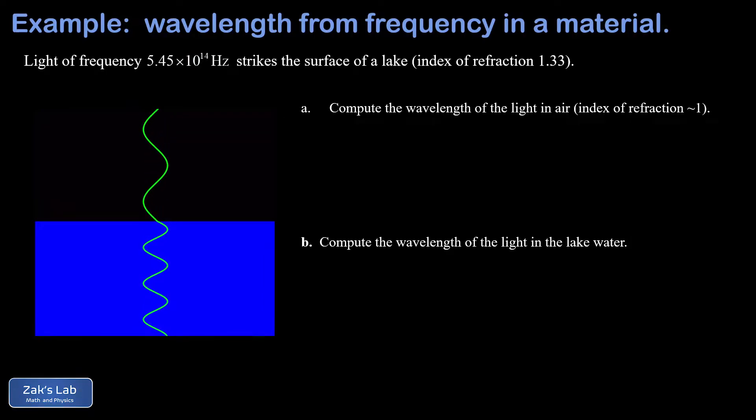In this video we're reviewing the relationship between wavelength and frequency for a light wave and what happens to the wavelength when light enters a medium. We're given the frequency of the light wave, 5.45 times 10 to the 14 hertz. In part a, we want to find the wavelength of light in air. We're told the index of refraction is very close to one, close enough to a vacuum that we can treat it like a vacuum.